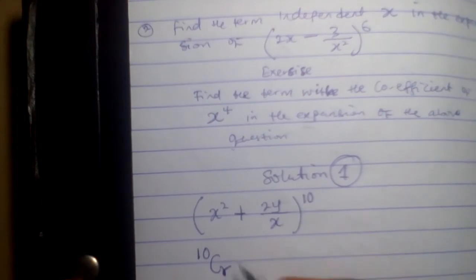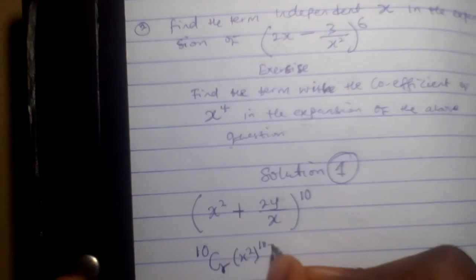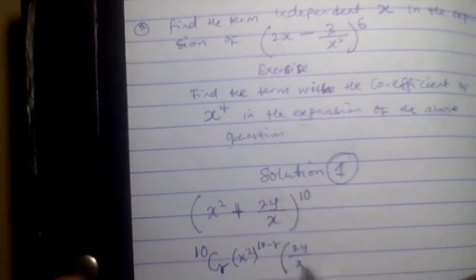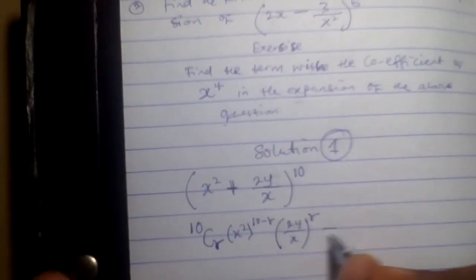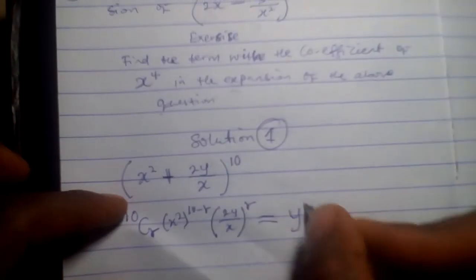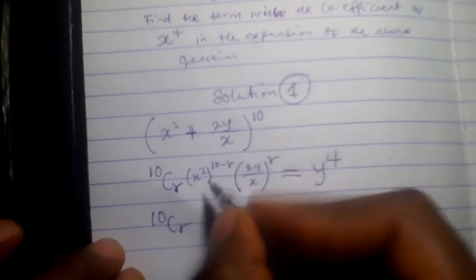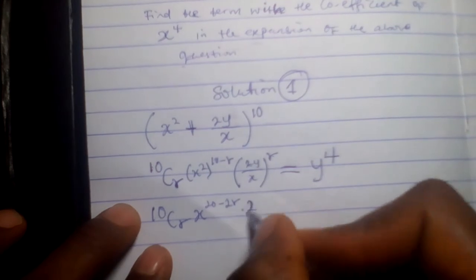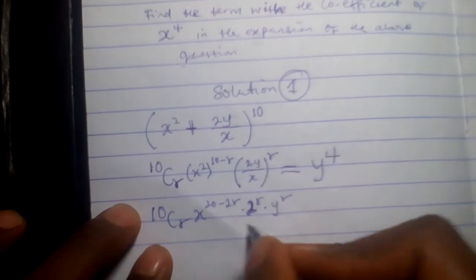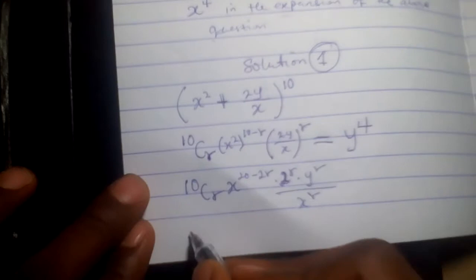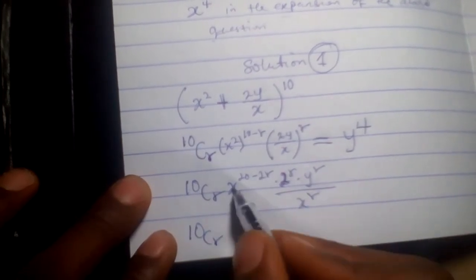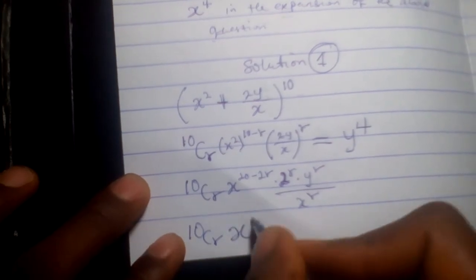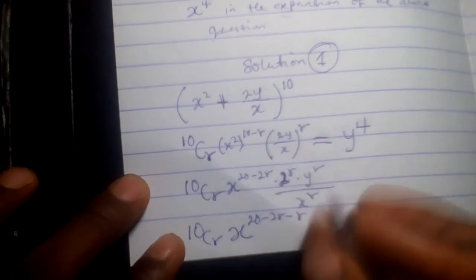I will copy everything. Normally, I will say x squared to the power 2. For finding each term, after taking the first value, we take this minus this. So 10 minus r will give us 10 minus r. Here we have plus 2y over x raised to power r. So I will equate this to y raised to power 4. I will simplify: 10Cr still remains. Here I have x raised to power 2 times 10 which is 20 minus 2r. Here we have 2 raised to power r times y raised to power r all over x raised to power r.